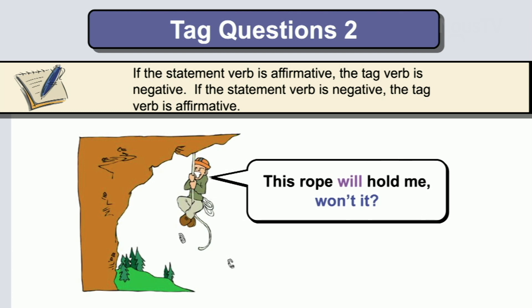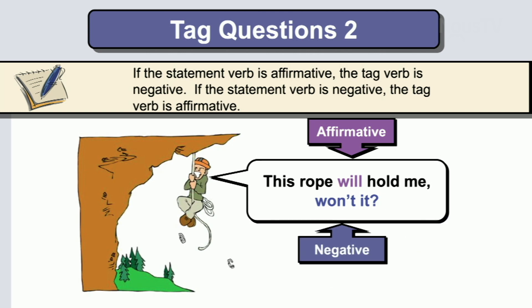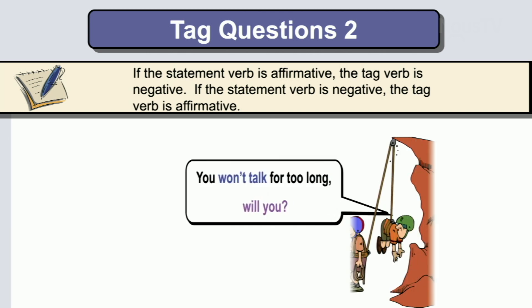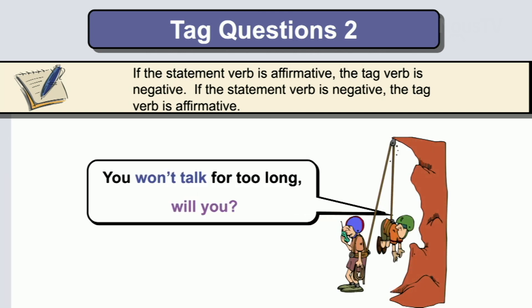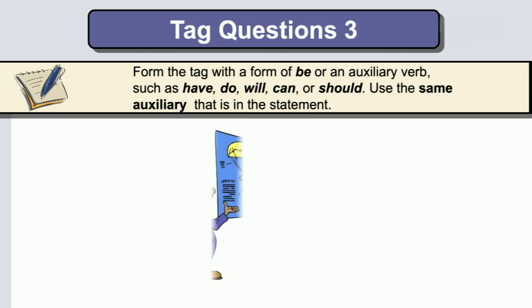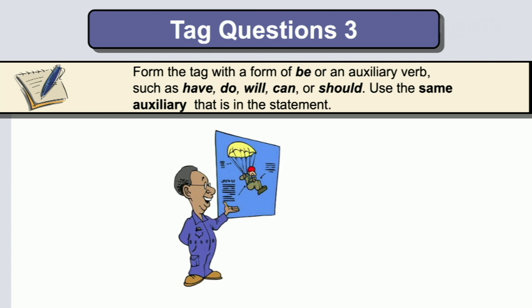Affirmative statement: this rope will hold me, won't it? — affirmative, then negative. We won't talk too long, will we? — negative, then affirmative. Form the tag with a form of be or an auxiliary verb such as have, do, will, can, or should — the same auxiliary that is in the statement.